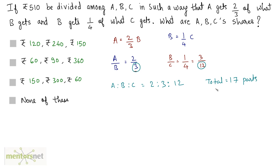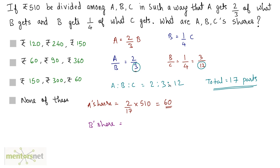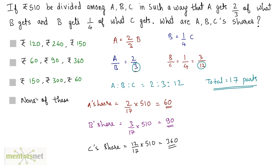So we have 17 parts. A gets 2 parts, B gets 3, and C gets 12 parts out of 17. A's share is 2 by 17 times 510 which equals 60. B's share is 3 by 17 times 510 which equals 90. C's share is 12 by 17 times 510 which equals 360. So our answer is option B.